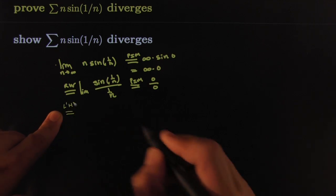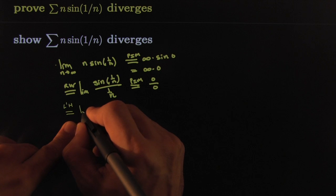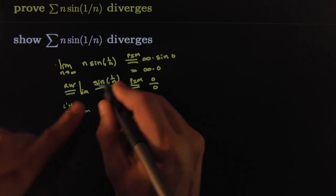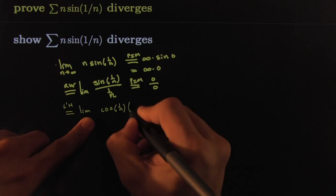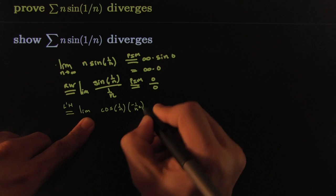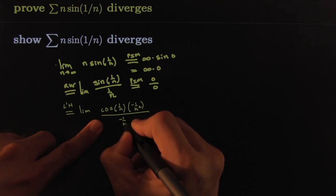famous L'Hôpital's rule, right? And L'Hôpital would say that this would be the limit, same limit—take the derivative. The top would be cosine of one over n times negative one over n squared, all over negative one over n squared.